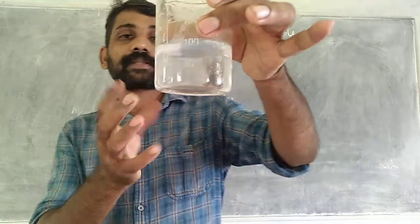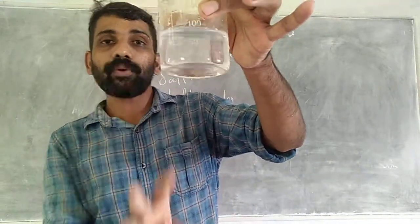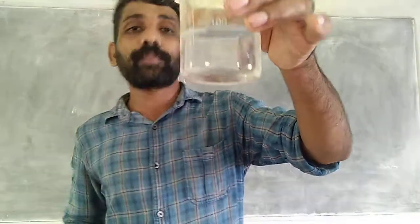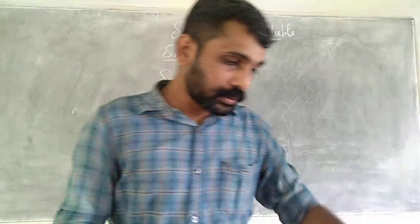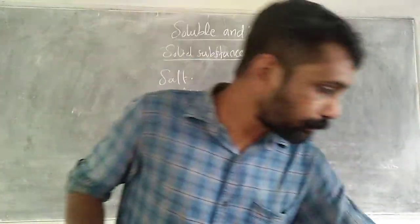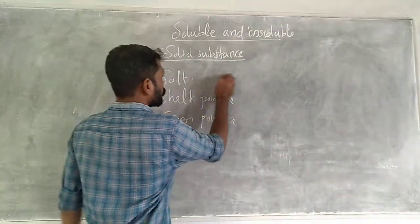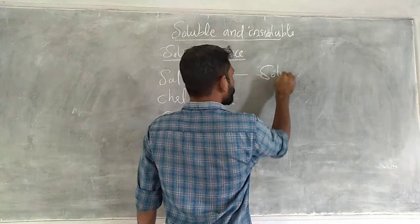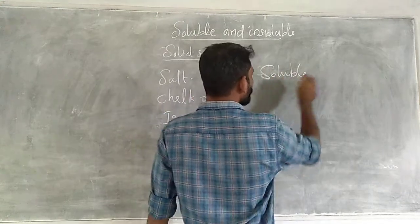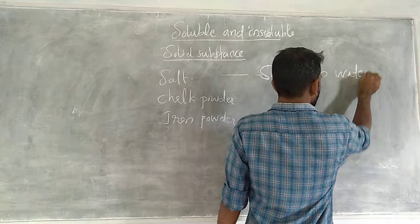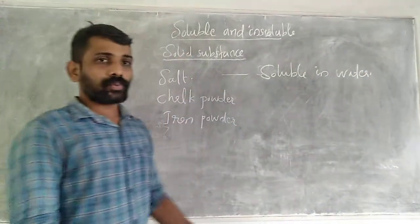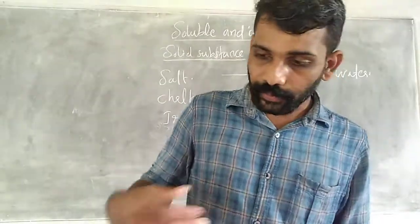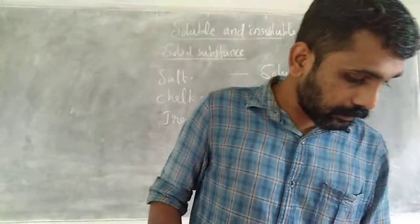We can say that salt is dissolved in water. Dissolved means disappeared — it disappeared in water. So salt is soluble in water. After we stir, the salt dissolves and disappears in water. Next, we can do an experiment with chalk powder.